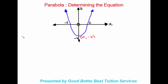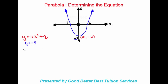Let's write our equation: y is equal to ax squared plus q. We are already being given q, which is negative four, so we can indicate q is equal to negative four. We can write our equation now as y is equal to ax squared minus four.